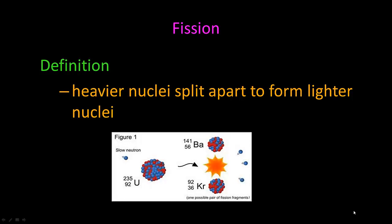So fission, the definition for that is when a heavier nuclei split apart to form lighter nuclei. An example of that would be uranium down here, and it captures a neutron and it splits into two smaller elements, barium and krypton.